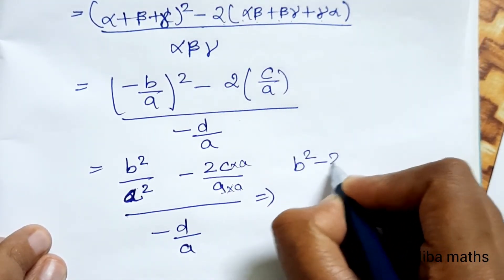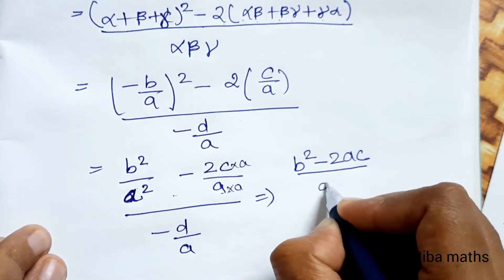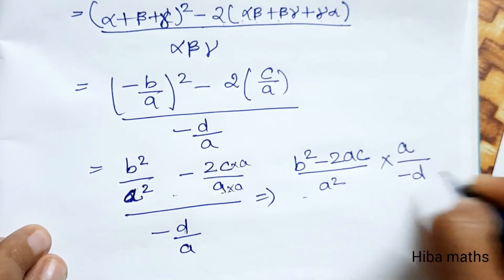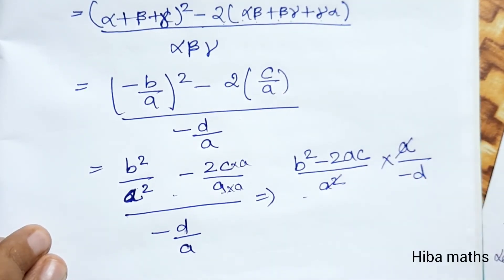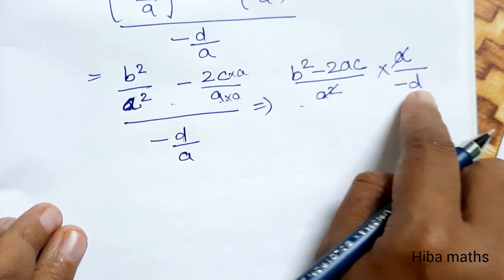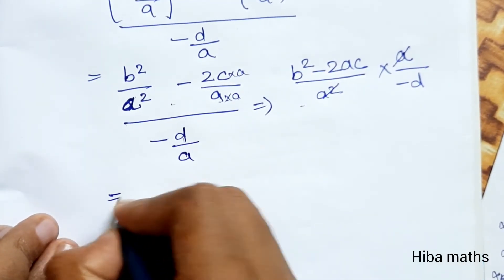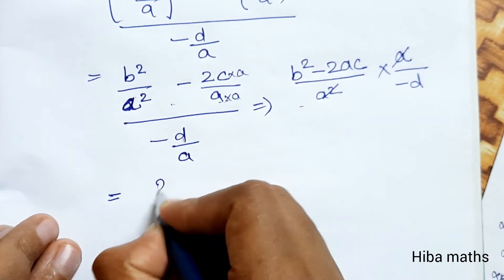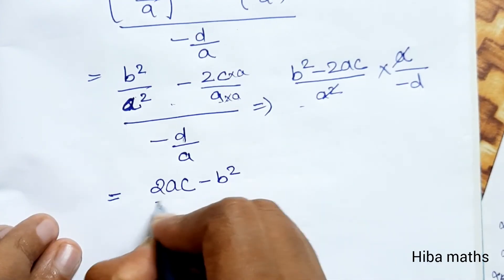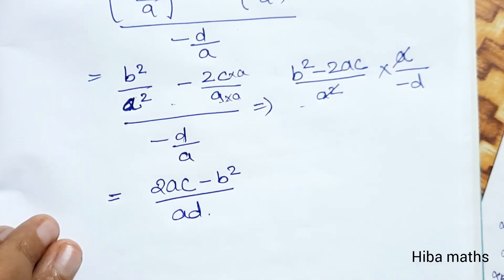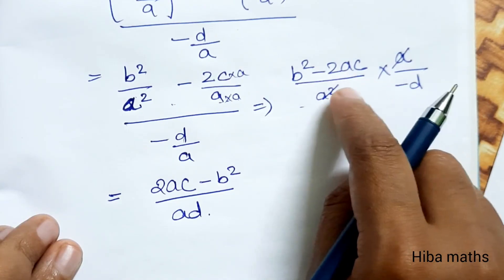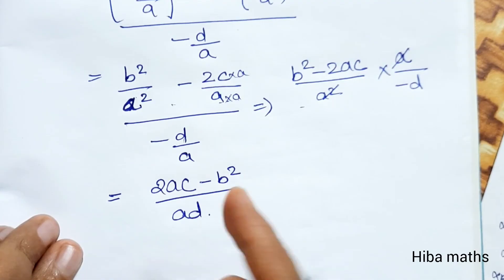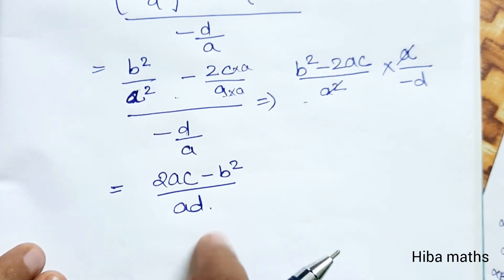Simplifying: b² minus 2·a·c, divided by a², multiplied by the reciprocal a over minus d. Cancelling a, we get b² minus 2ac divided by a·d. Multiplying through with the minus sign, the final answer is (2ac minus b²) divided by a·d.